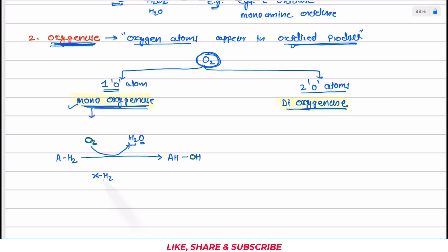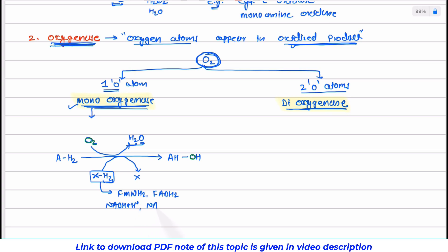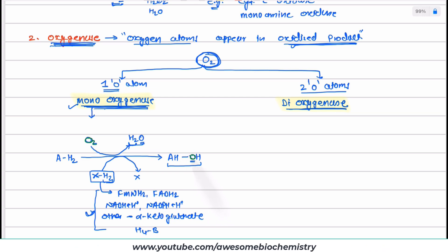The second substrate XH2 donates its two hydrogen atoms to the single oxygen atom, forming water, and XH2 gets converted to product X. This second product X is mostly FMNH2, FADH2, NADH + H⁺, or NADPH + H⁺, or it can be other coenzymes such as alpha-ketoglutarate or tetrahydrobiopterin. Since the final oxidized substrate gains a hydroxyl group, monooxygenase is also called hydroxylase.